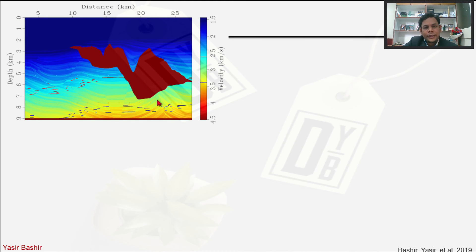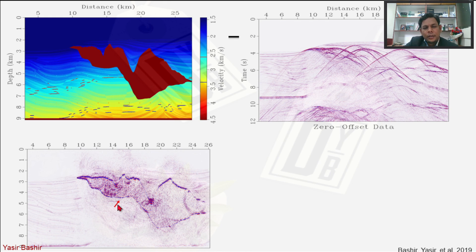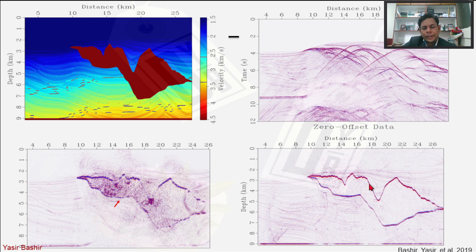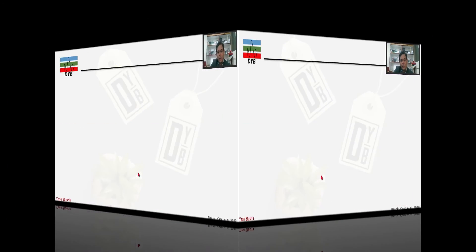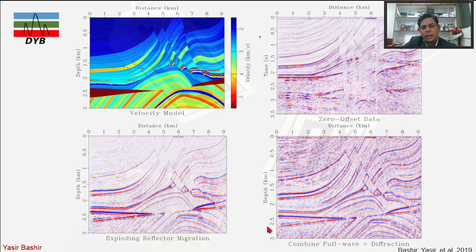Another example from the Gulf of Mexico shows a velocity model and zero-offset gather data with significant diffractions in the unmigrated section. Comparing Kirchhoff migration and wave equation migration, the wave equation result better recovers the salt body geometry and the reflectors below it. The Marmousi fracture model example compares offset data, exploding reflector migration, and exploding reflector migration with diffractions, showing significant improvement in resolution and data quality.